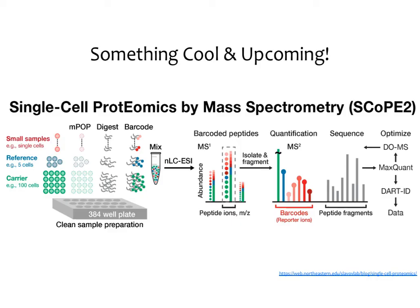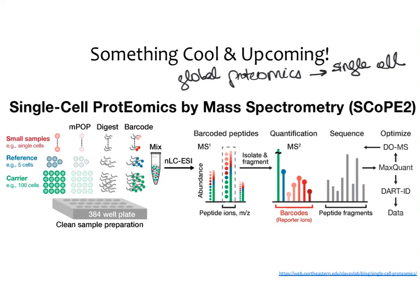Just as we do global proteomics, we could also imagine doing single-cell proteomics, similar to how we've talked about RNA-seq at the single-cell level. This is a technology that's up and coming, where you can barcode single cells the same way we've discussed for RNA-seq and measure protein levels in every single cell. This would have a lot of power and really allow us to expand our understanding of how proteins are changing within populations within samples.